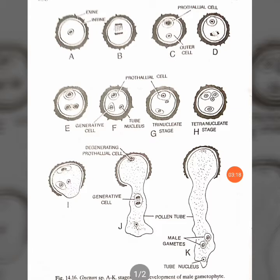The larger outer cell then redivides, as seen in figure D, forming a generative cell and a tube nucleus, visible in figure F. The tube nucleus moves to lie near the prothallial cell in figure G and has no cell wall. Both the prothallial cell and the generative cell have their nuclei surrounded by a sheath, while the tube nucleus does not.